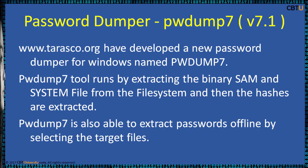Password Dumper version 7 — Tarasco.org has developed a new password dumper for Windows named PWDump7. The PWDump7 tool runs by extracting the binary SAM and system file from the file system, and then the hashes are extracted. PWDump is also able to extract passwords offline by selecting the target files which contain the hashes.